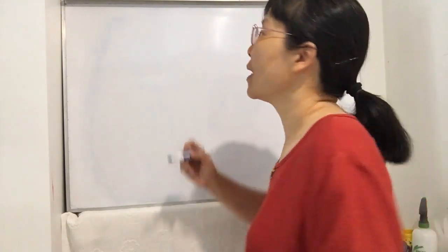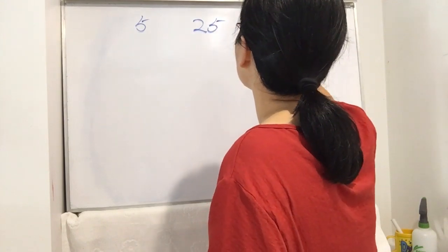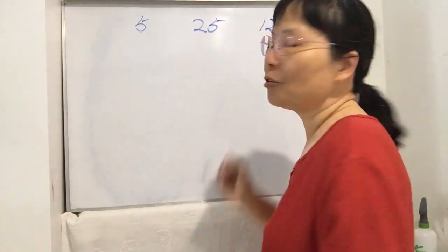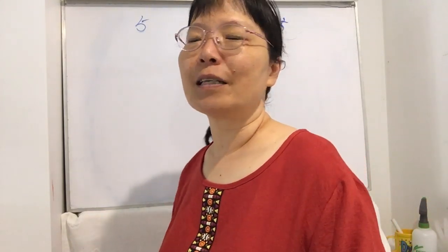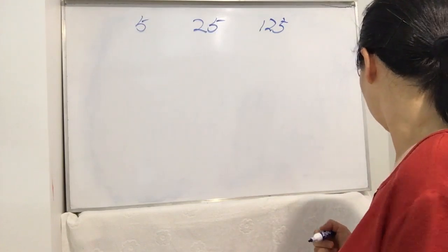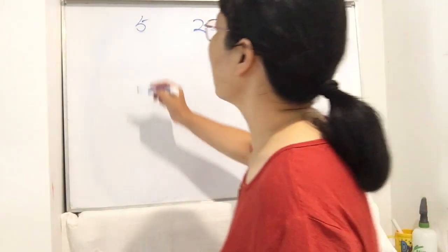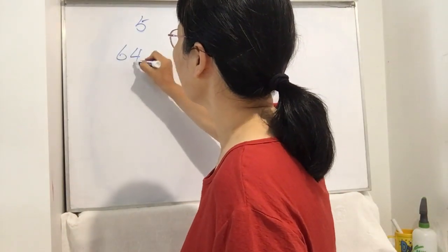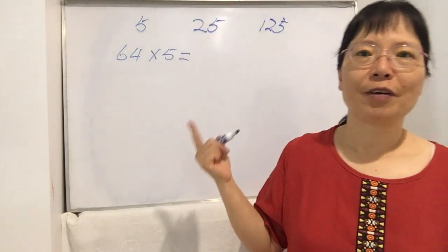Today I'm going to share with you a special trick for multiplication. When you times any number by 5, 25, or 125, how do you work out the answer very fast? Let's start. Suppose, for example, if you want to calculate something like 64 multiplied by 5 — what way can you use to work it out very fast?